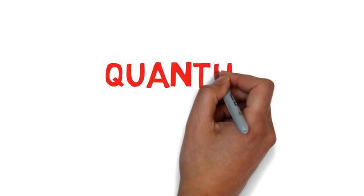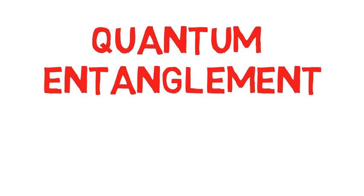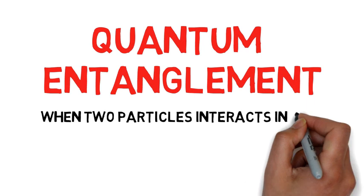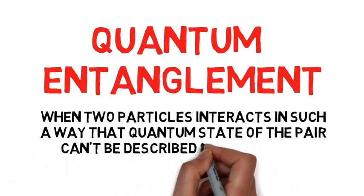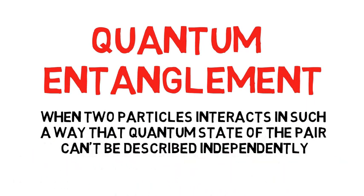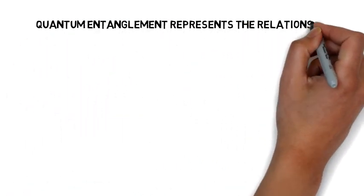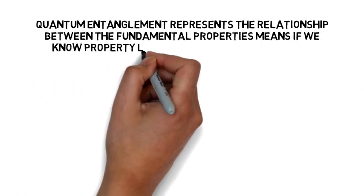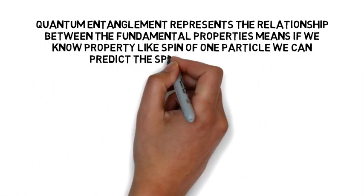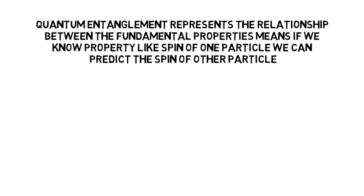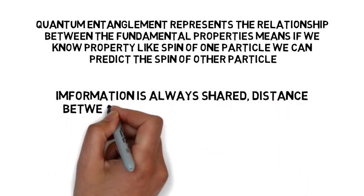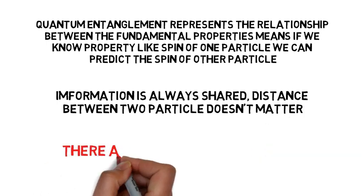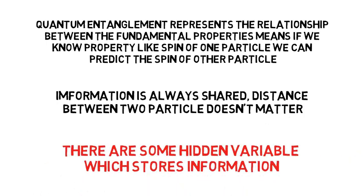Now let's come to the next thing: quantum entanglement. It is a physical phenomenon which occurs when a pair of particles interact in such a way that the quantum state of the pair can't be described independently. Quantum entanglement represents the relationship between fundamental properties. Knowing the measurement like spin of one particle, we can predict the spin of the other particle. This prediction doesn't depend upon the distance between the two particles. Information is always shared, and we can always predict the state of the second particle.